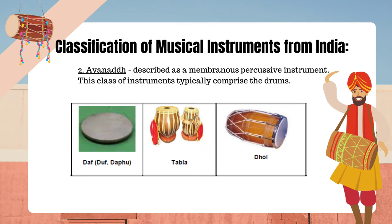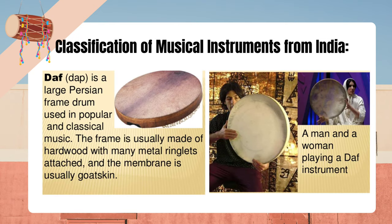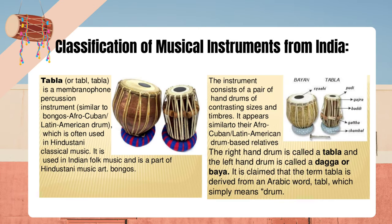Avanad — described as a membranous percussive instrument. This class of instruments typically comprises the drums. Daph is a large Persian frame drum used in popular and classical music. The frame is usually made of hardwood with many metal ringlets attached, and the membrane is usually goatskin. Tabla is a membranophone percussion instrument similar to Bongos (Afro-Cuban/Latin American drum), which is often used in Hindustani classical music. It is used in Indian folk music and is a part of Hindustani music art.